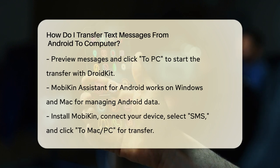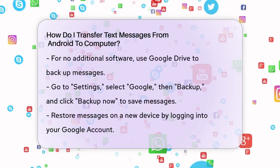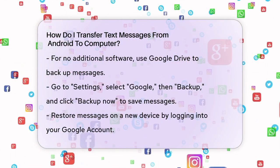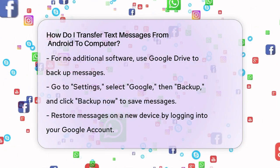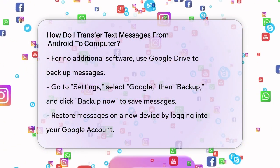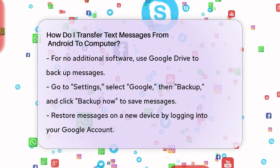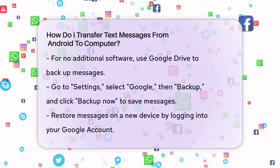If you prefer not to use any additional software, you can use the built-in features of your Android phone. For instance, you can backup your text messages to Google Drive. Go to your phone's settings, select Google, then Backup, and click Backup Now. This will save your text messages, call logs, and other data to your Google Drive account. To restore these messages on a new device, simply log in to your Google account on the new phone and follow the prompts to restore your backup.